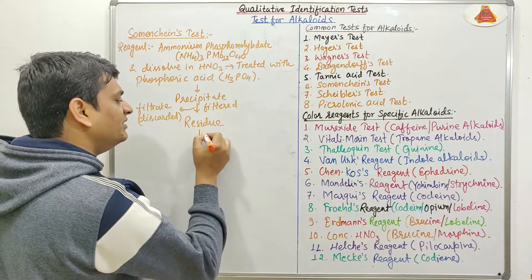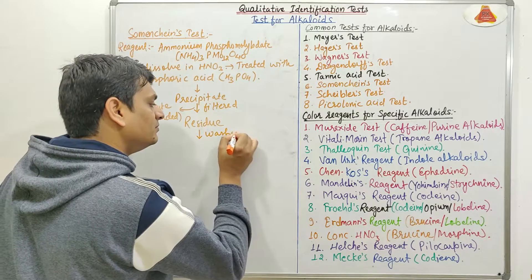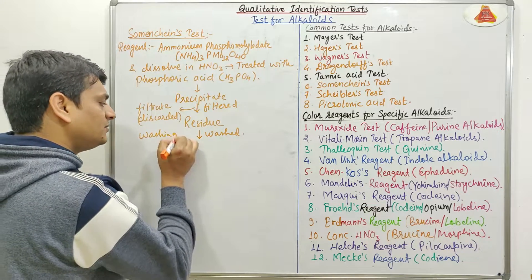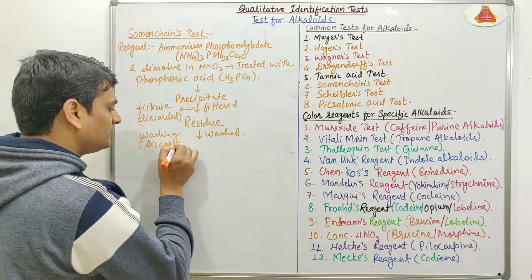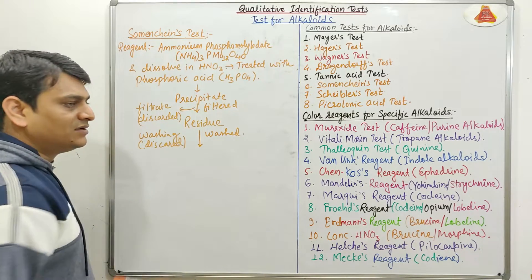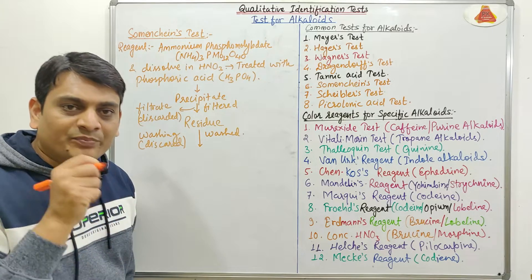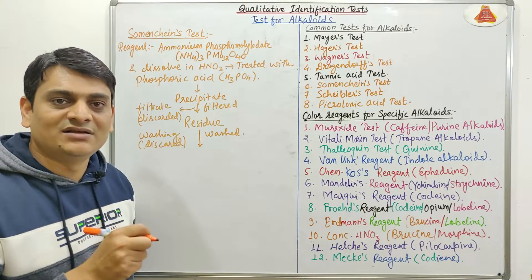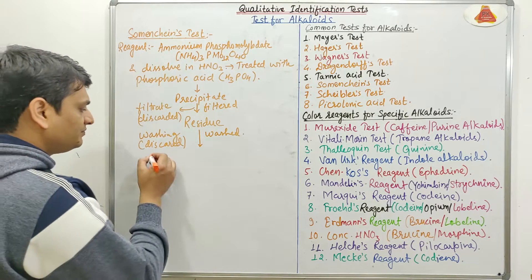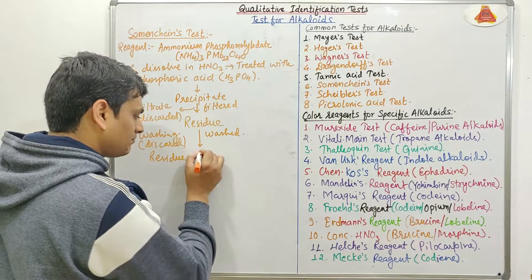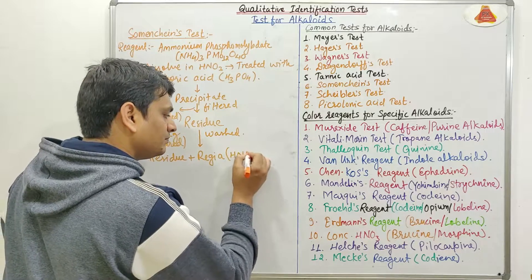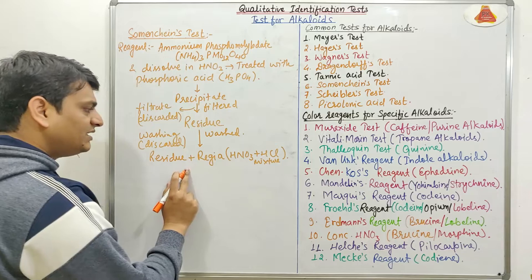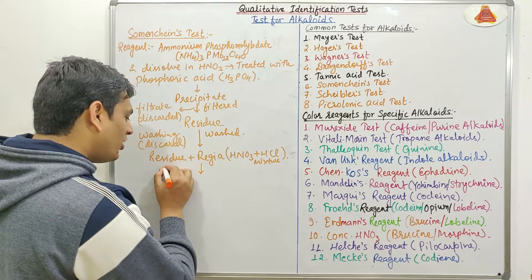This residue will be taken and washed, and after washing, we will discard the washing. This residue will then be mixed with Aqua Regia and boiled. Aqua Regia is the mixture of HNO3 and HCl. This residue and Aqua Regia will be boiled together.